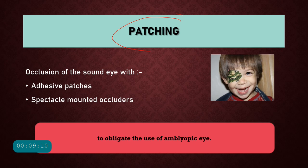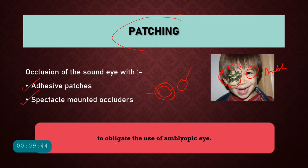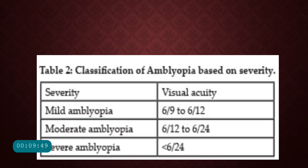Patching means occluding the sound or better eye with adhesive patches or spectacle-mounted occluders. The main principle is to obligate the use of the Amblyopic eye. Before describing patching duration, it is important to know the severity classification: mild Amblyopia is 6/9 to 6/12, moderate is 6/12 to 6/24, and severe Amblyopia is worse than 6/24.